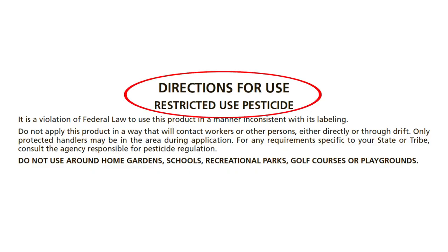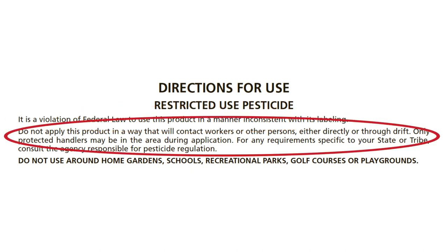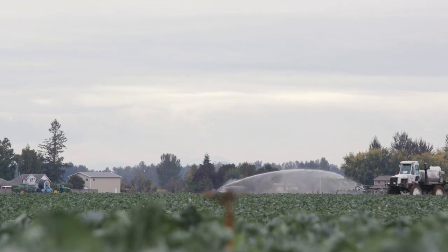The Directions for Use section has two very important statements. The first one means that it is against the law if you do not follow the pesticide label directions. The second one means that it is against the law for anyone other than handlers with the required PPE to be in the treated area during an application, and that the applicator cannot allow the pesticide to contact anyone directly or indirectly.